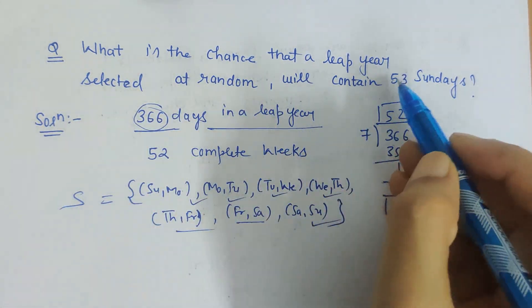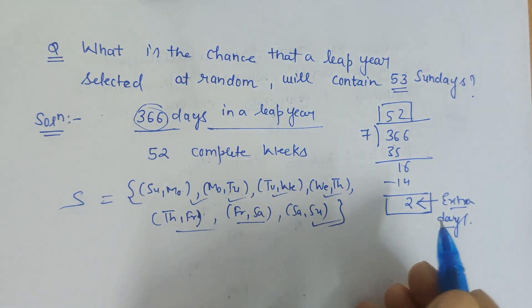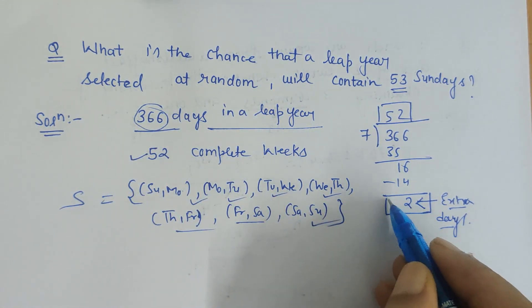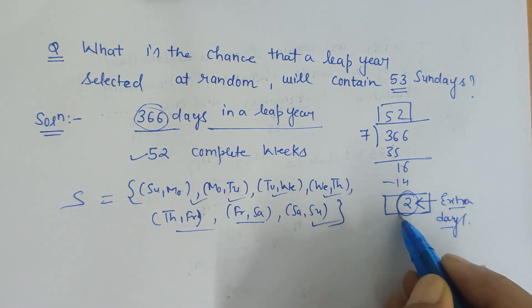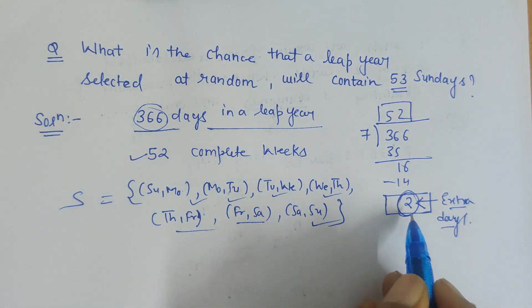That means, since it has 52 Sundays in 52 weeks already, out of these two extra days one day has to be Sunday. So what is the favorable outcome?